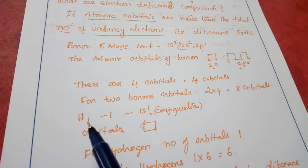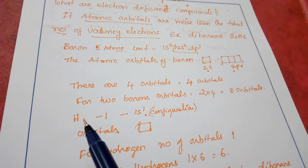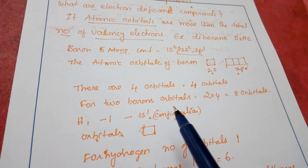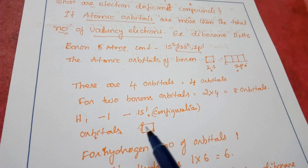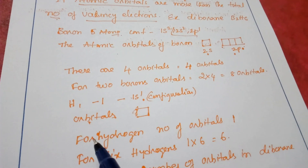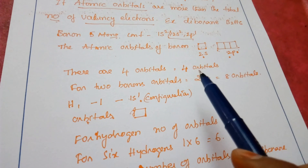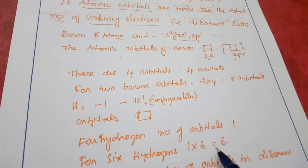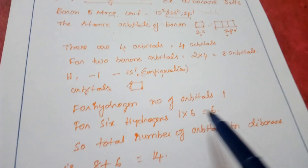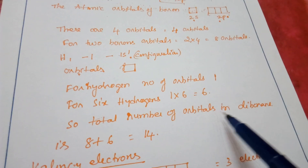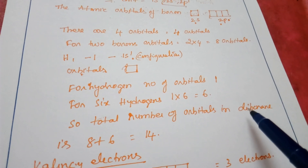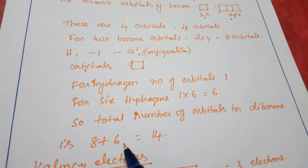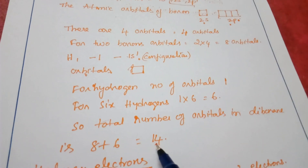Now let us look at hydrogen. Hydrogen has atomic number 1 and configuration 1s¹, so it has only 1 orbital. There are 6 hydrogen atoms in diborane, so 6 × 1 = 6 orbitals from hydrogen. The total number of atomic orbitals in diborane B₂H₆ is 8 + 6 = 14.